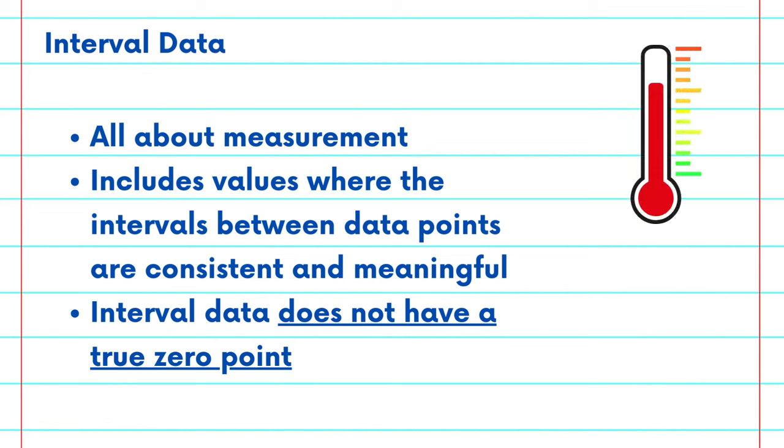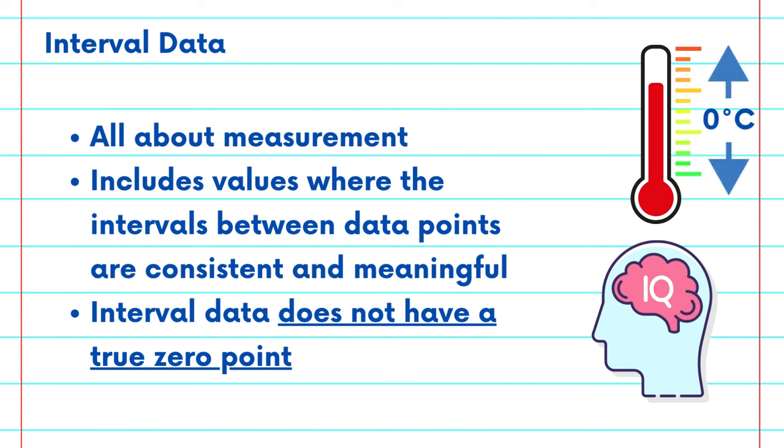Think of temperature in degree Celsius or IQ scores. However, here's a crucial point. Interval data doesn't have a true zero point. In the case of Celsius, a temperature of zero degrees Celsius doesn't mean the absence of temperature. It's just a specific point on the scale.